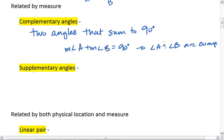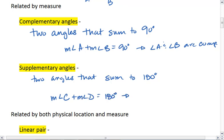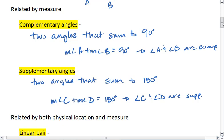You also have supplementary angles. Supplementary angles are two angles that sum to 180 degrees. So if the measure of angle C plus the measure of angle D equals 180 degrees, then angle C and angle D are supplementary. So this is how angles can be related by their measure.